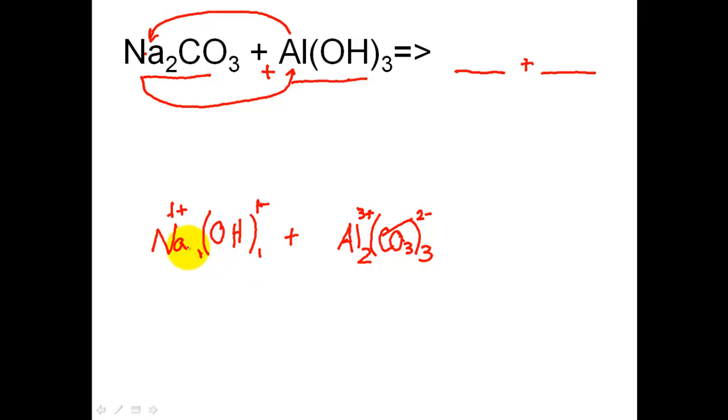So the final product is Na1 OH1 plus Al2, parentheses CO3, and then the outside of the parentheses, a 3.